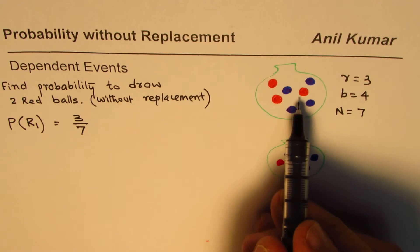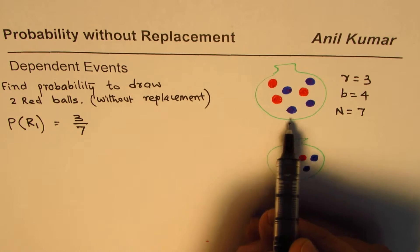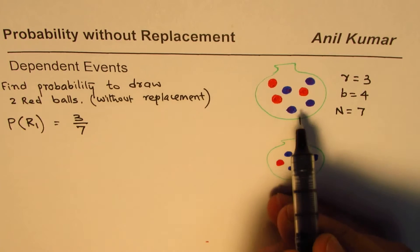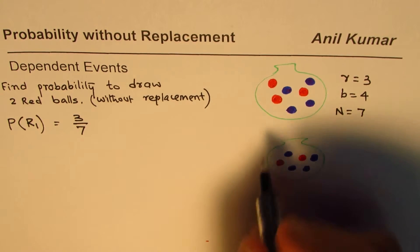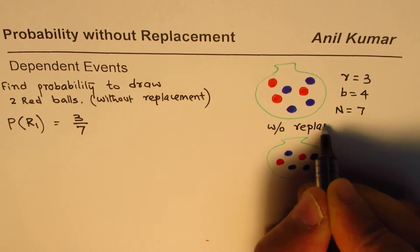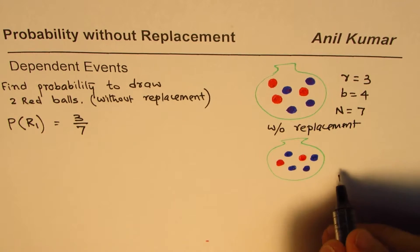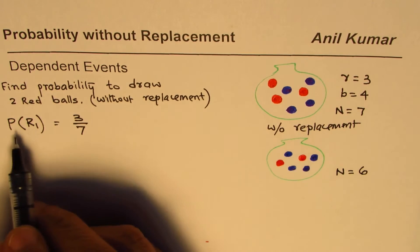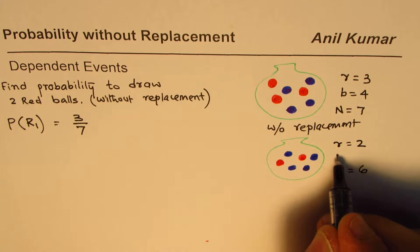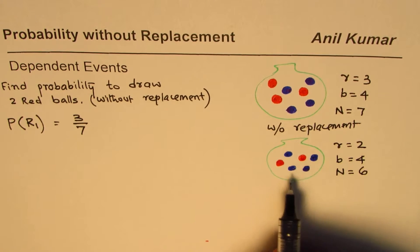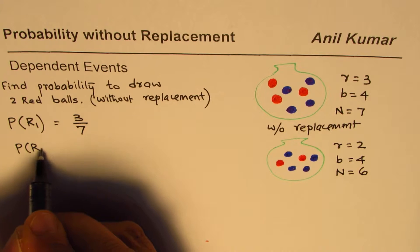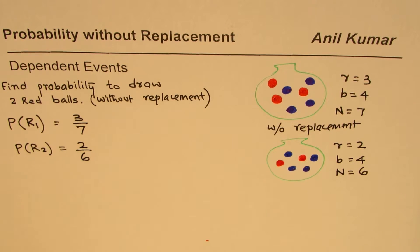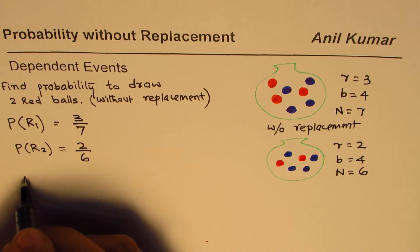If you replace the ball after picking it, you have exactly the same situation and the probability of picking the next ball remains the same — not dependent on the previous one. But without replacement, the sample space changes: n is no more 7, it is 6. Since we picked a red ball, we are left with only two red balls and still four blue balls. So the probability of picking the second red ball is 2 out of 6.